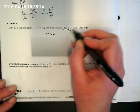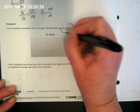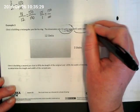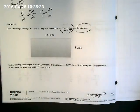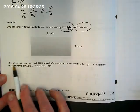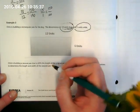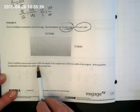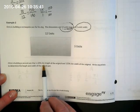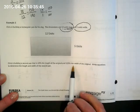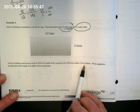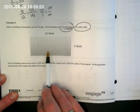Now Chris is building a second pen, and this is where it gets a little bit confusing. It's 60% the length of the original and 125% the width of the original. So that means we're not enlarging this exact shape.